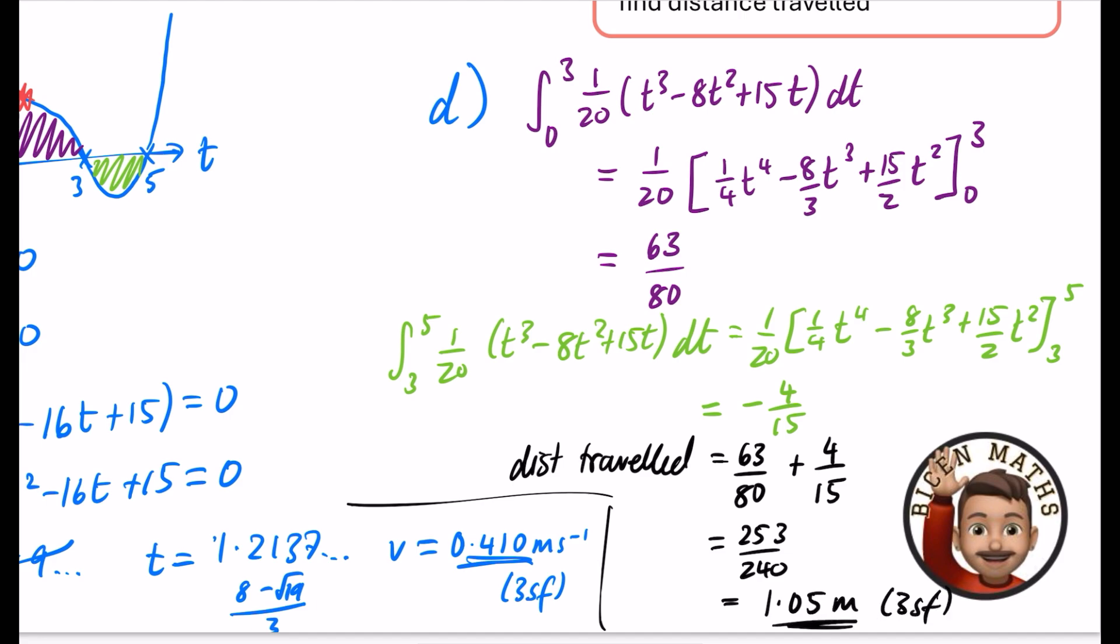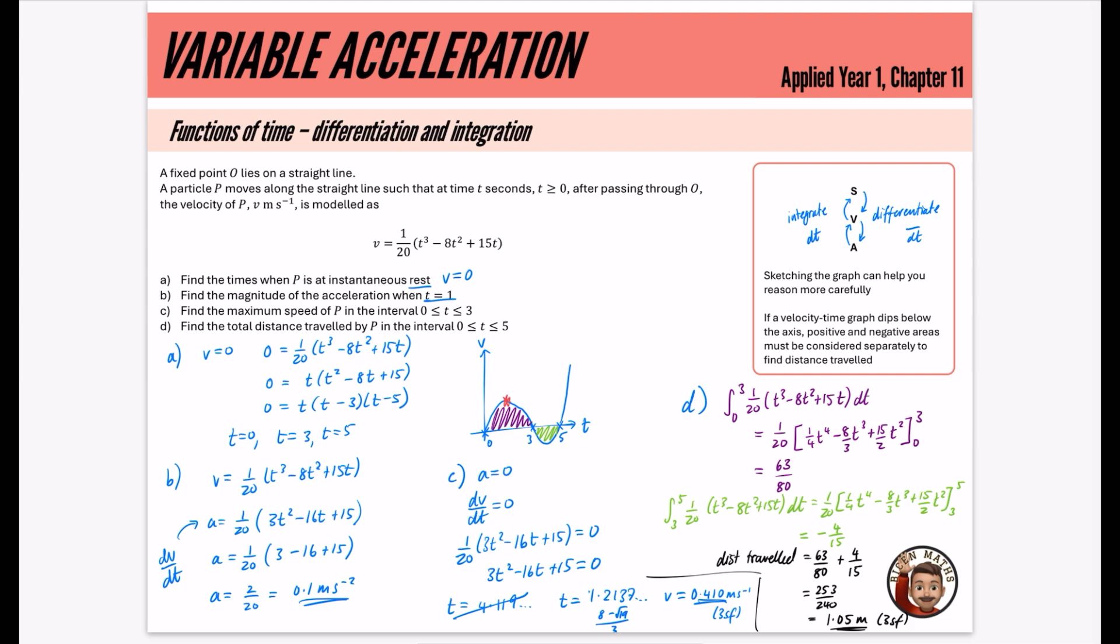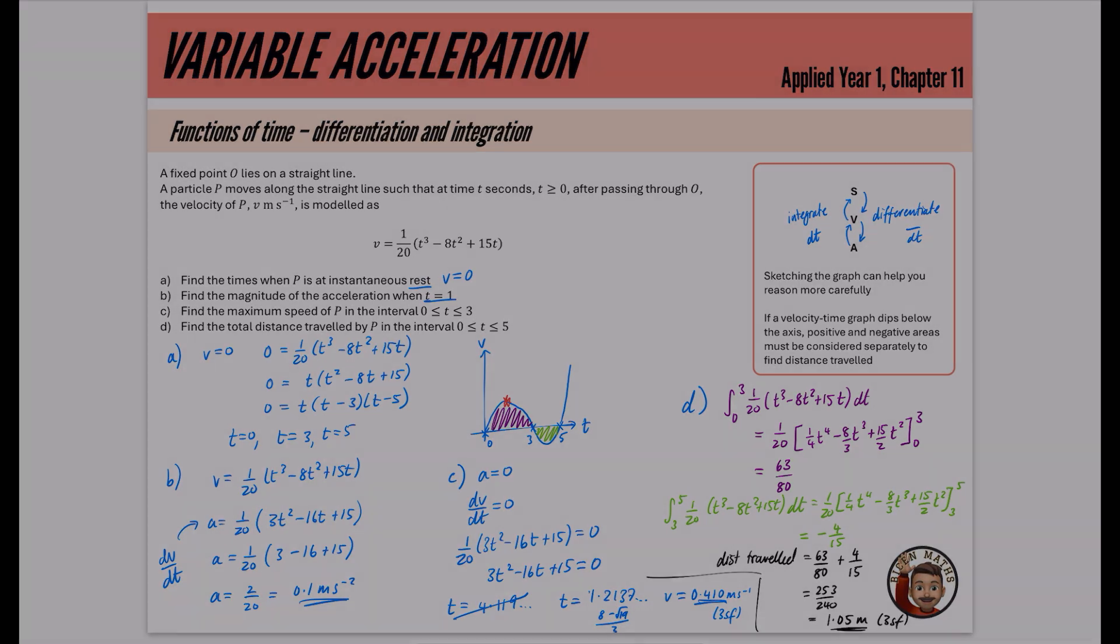This is pretty much everything that was needed in this question, in this topic, all in this one question. We had the differentiation to go from velocity to acceleration. We then did some investigation to find the maximum speed. We had something to do with distance, so we went from the velocity expression using integration, and we were careful of that negative area. Using the graph makes this question much easier to think what's going on. That is all of Applied Year 1 done. I'm going to start moving on to Applied Year 2 stuff, and I hope to see you in another one of my videos very soon.